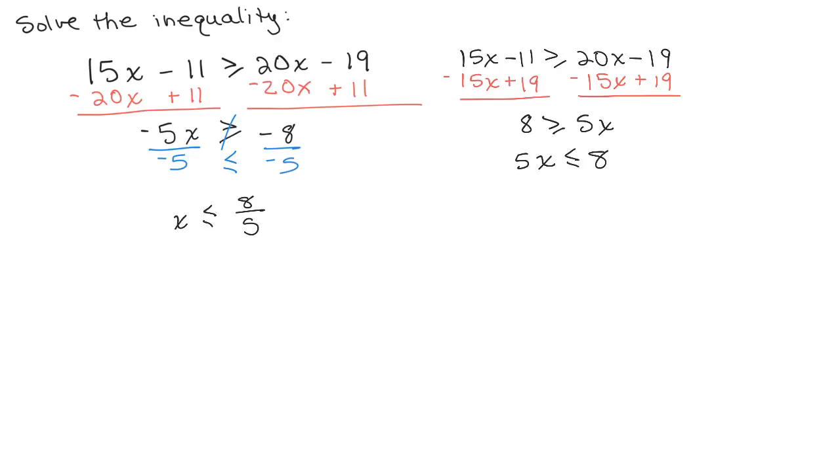So if we do that now, notice I do have the variable on the left again, but I don't have any negative number in front of x. So when I divide by 5, I do not switch the inequality symbol. So x less than or equal to 8 fifths, I get the same answer.